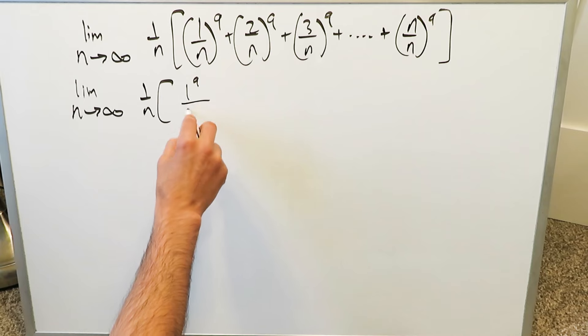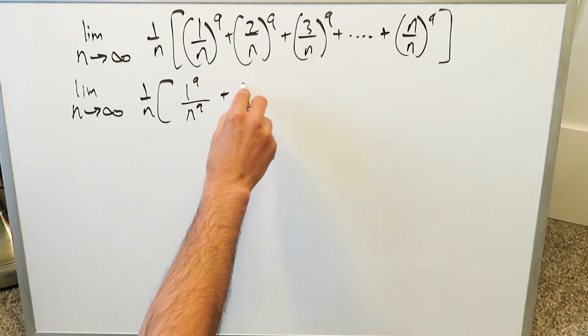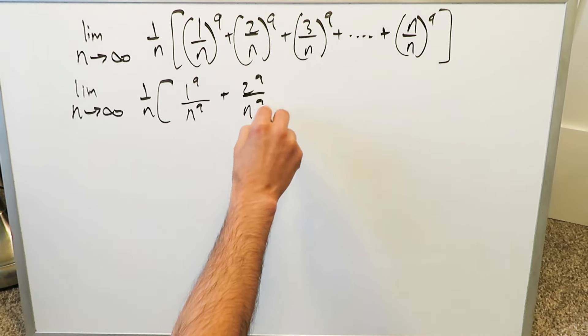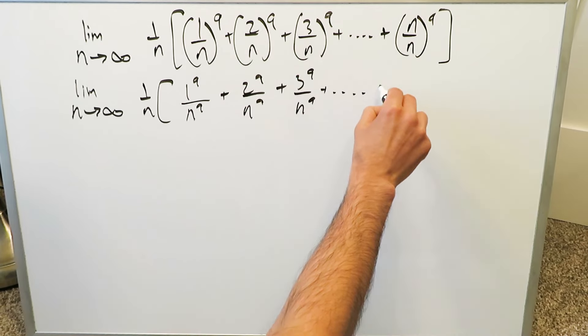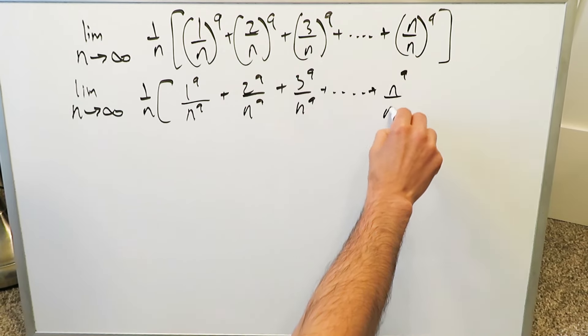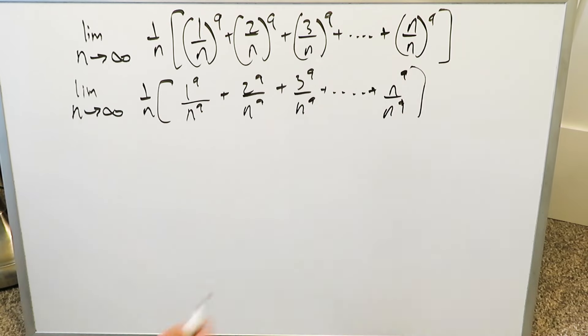1 to the power of 9 divided by n to the power of 9, and you can do the similar procedure all the way across. There's nothing wrong with you doing that because it helps you take this question forward.